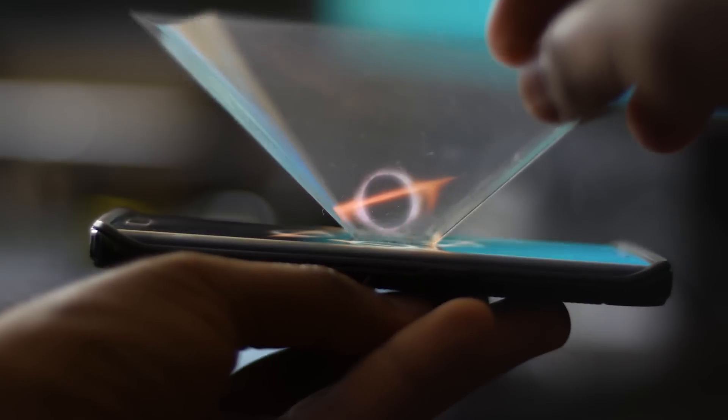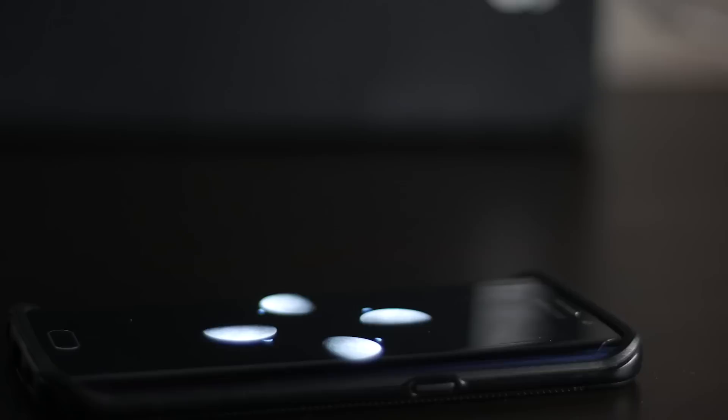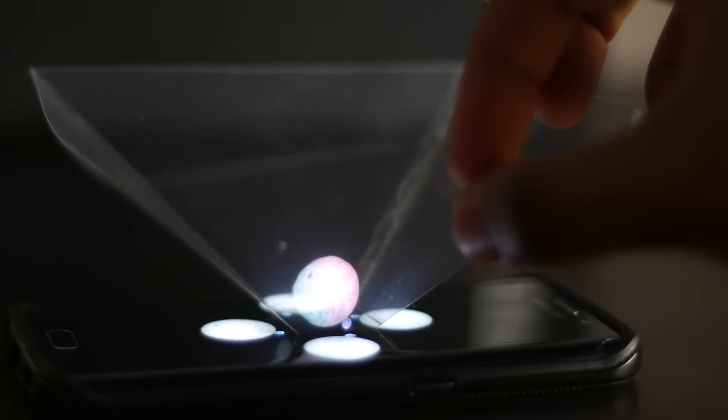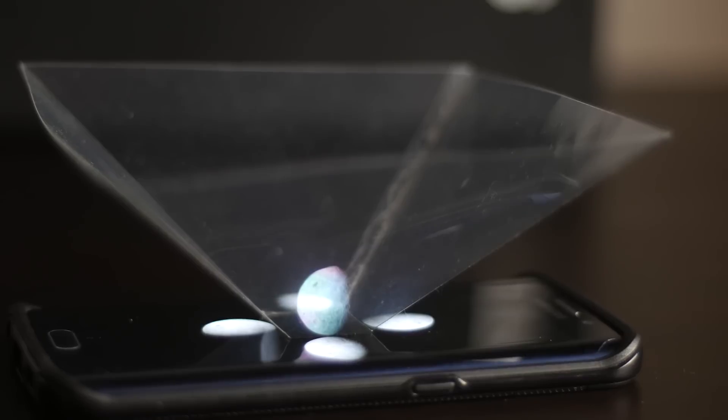And we'll have a link in the description showing you how to actually create this thing. But what you're looking at is basically a four-sided video being played on the smartphone. And the individual reflections on each side of the pyramid actually gives you the impression and illusion that there's an object hovering in midair.